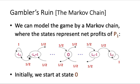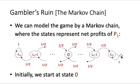For the extreme cases, when player 1 has net profit L2, we stay at that state forever — it is an absorbing state. Similarly, when player 1 has net profit minus L1, he goes bankrupt and we stay in that state forever. Initially for this chain, we start at state zero. The problem we want to analyze is: if we walk on this chain, what is the probability that we reach state L2 rather than state minus L1?